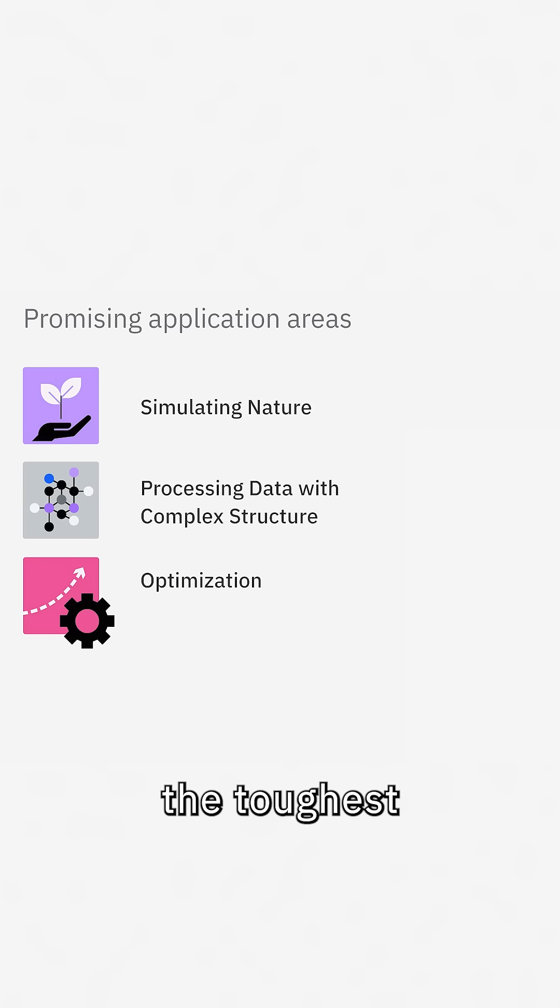Optimization problems are some of the toughest computational problems to solve efficiently. In an optimization problem, you are looking for the largest or smallest possible value for a given cost function. However, for many problems of interest, finding this extremum becomes exponentially more difficult with the size of the problem. That's why it becomes so hard to compute.